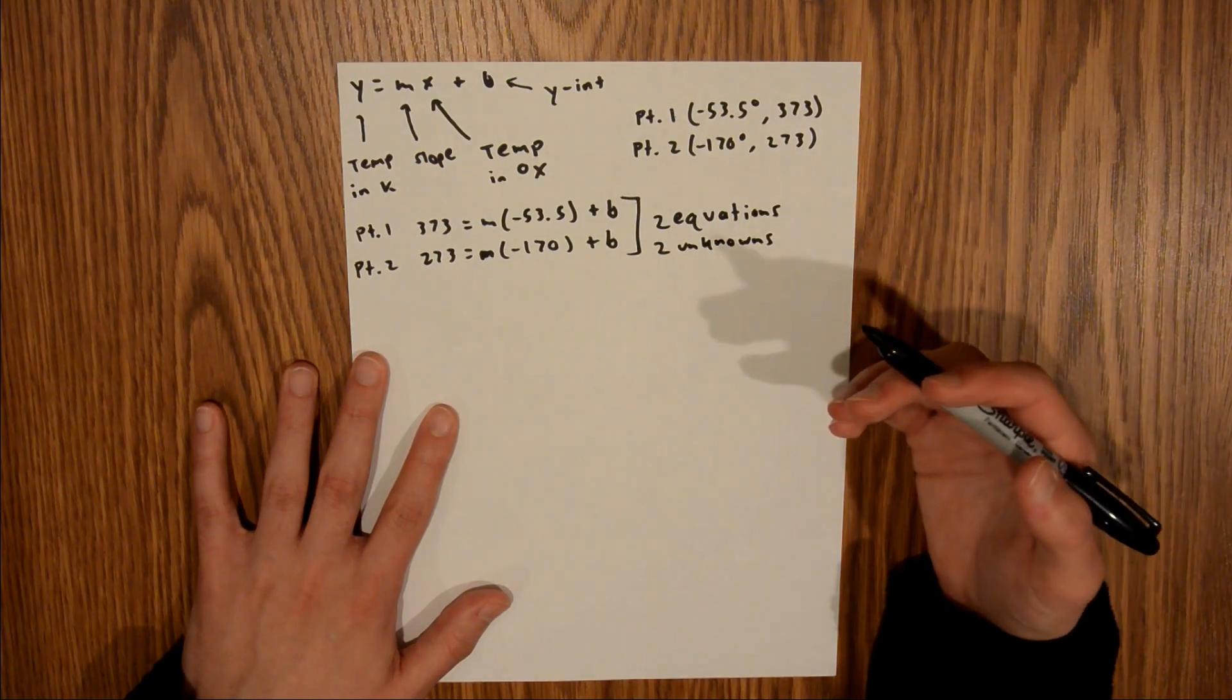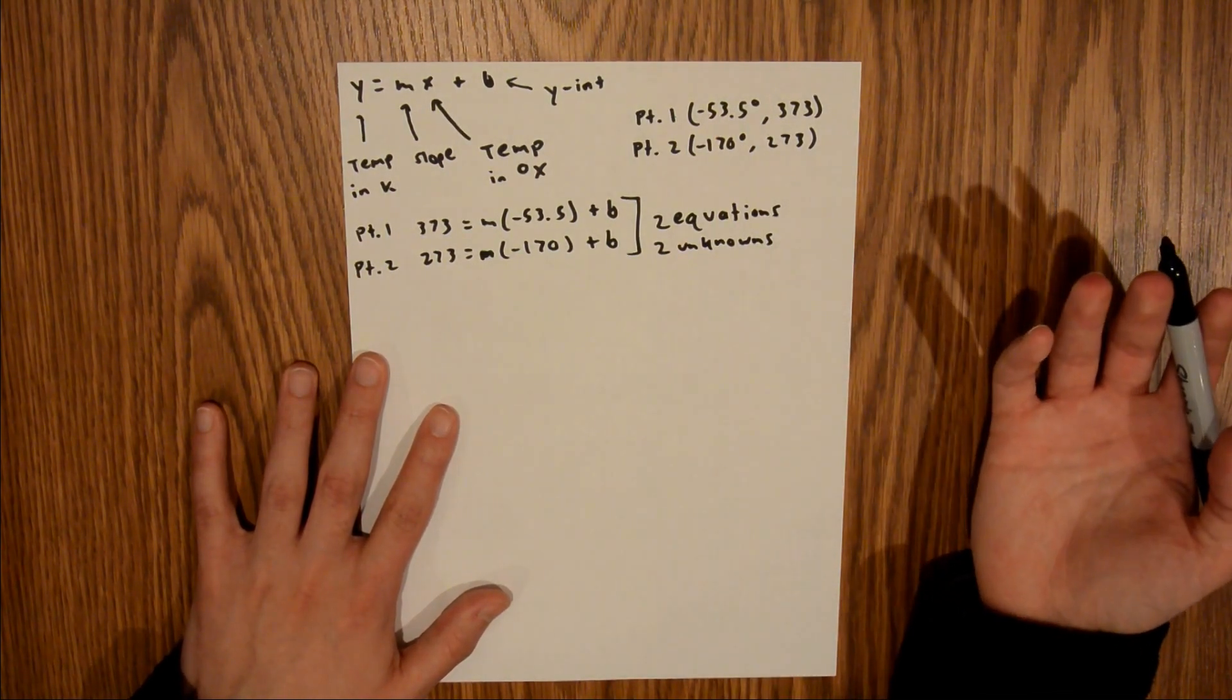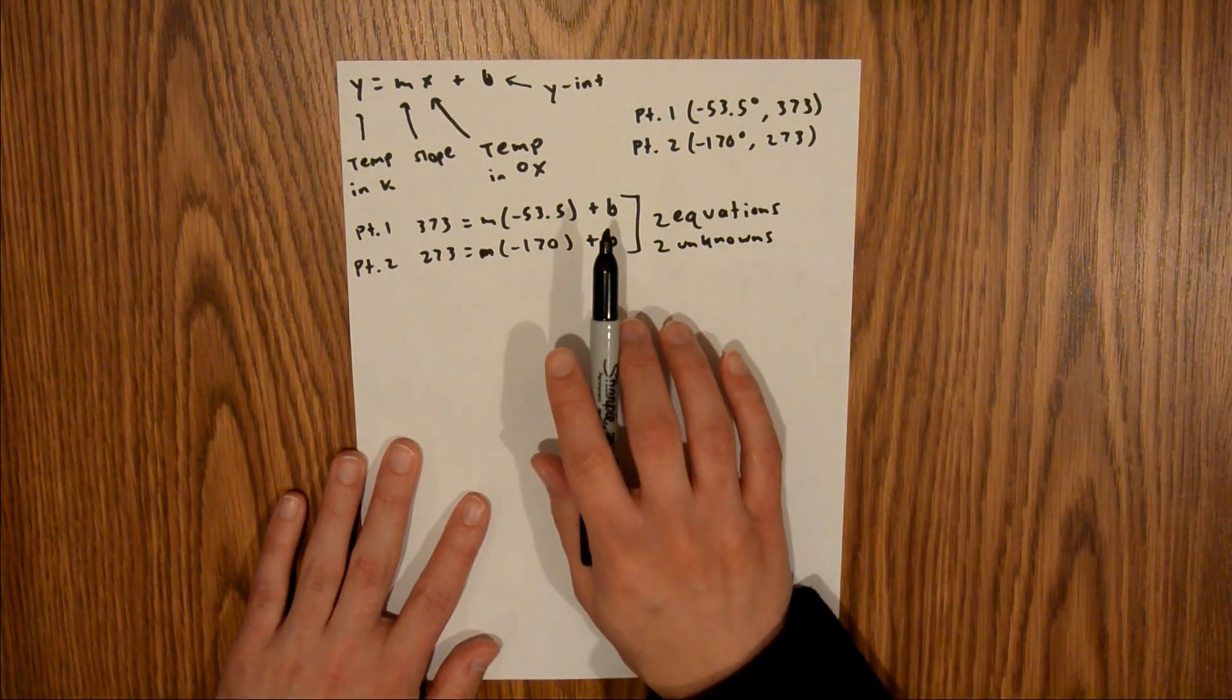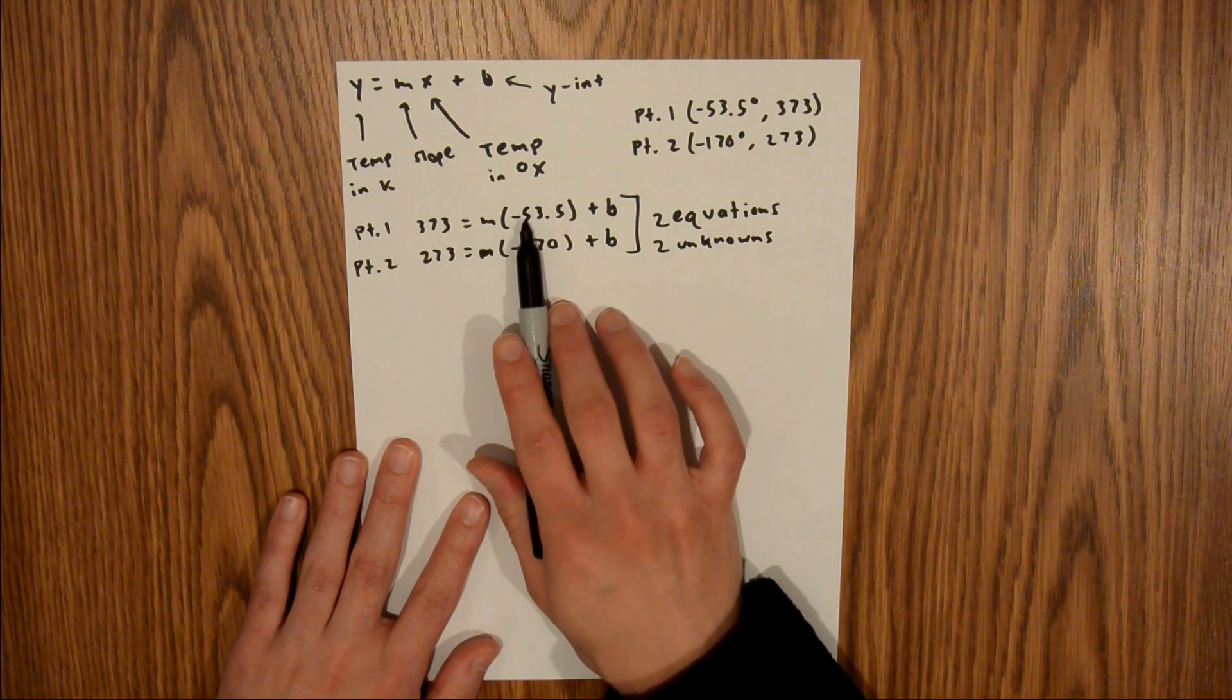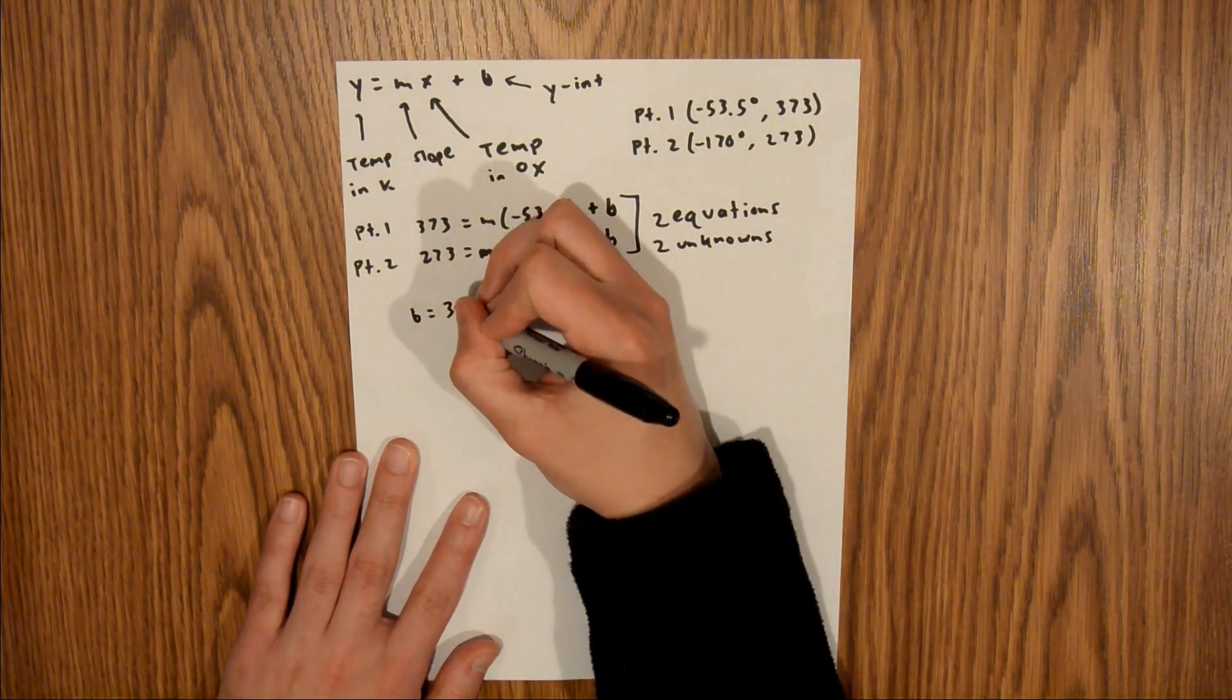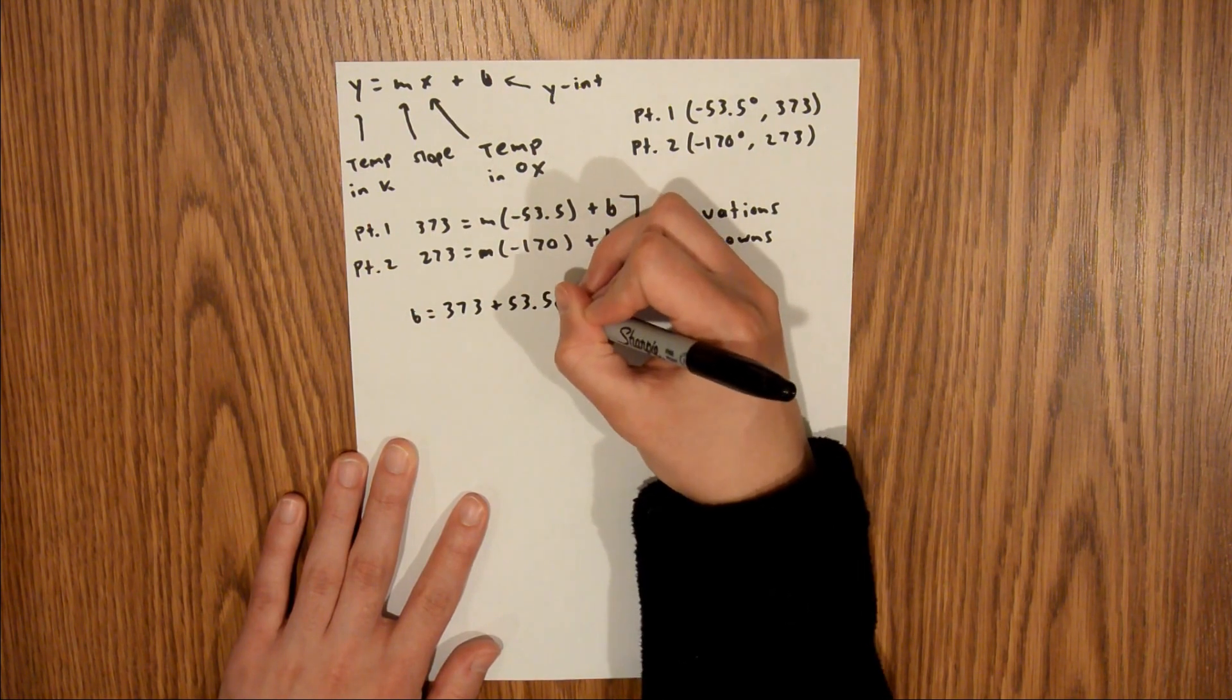Now, if this was given to you on a test, or you weren't allowed to use a solver, you'd have to do it by hand, and that's what I'm going to show you right now. What I'm going to do first is isolate b in the first equation. I'm going to add 53.5m to both sides of this equation, and that's going to leave me with b is equal to 373 plus 53.5m.